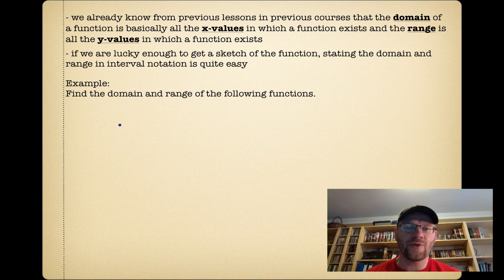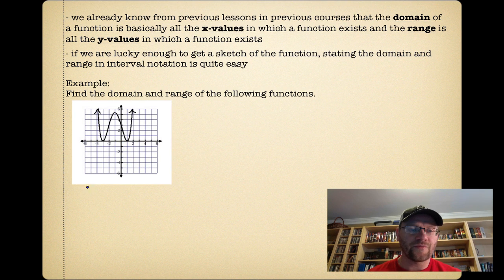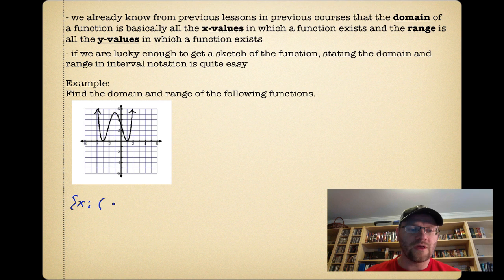Here's our first example: find the domain and range of the following functions. For our first graph, the domain uses the x variable. We can see that this function goes everywhere from left to right, because the arrows indicate that the graph goes up and also out to the side. So in interval notation, the domain is from negative infinity to positive infinity.